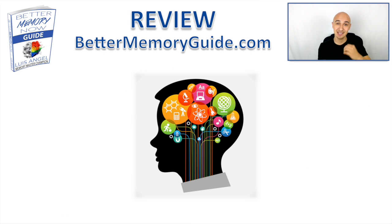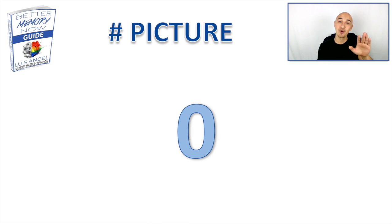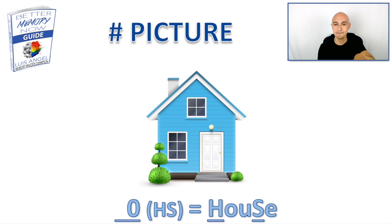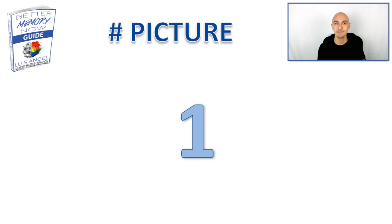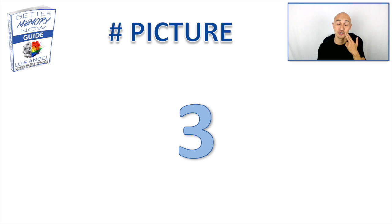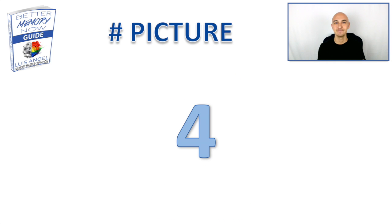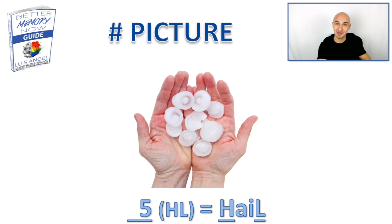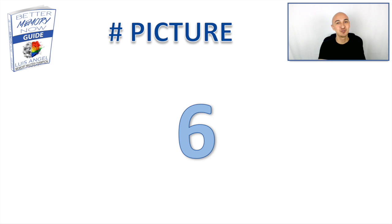Let's review to cement this into our long-term memory. Zero has an S sound — with the H in front and some vowels you get house. One has a T sound — picture is hat. Two: picture honey on your nose. Three has an M sound, associated to our mouth — it's ham. Four: picture an hourglass on your ribs. Five: associate to our liver — it was really cold because we had hail on the liver. Six: our hip joint was very hungry, so we were feeding it hash brown.